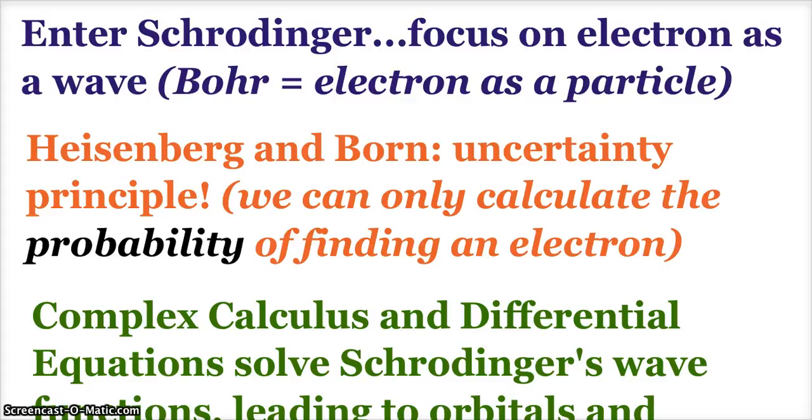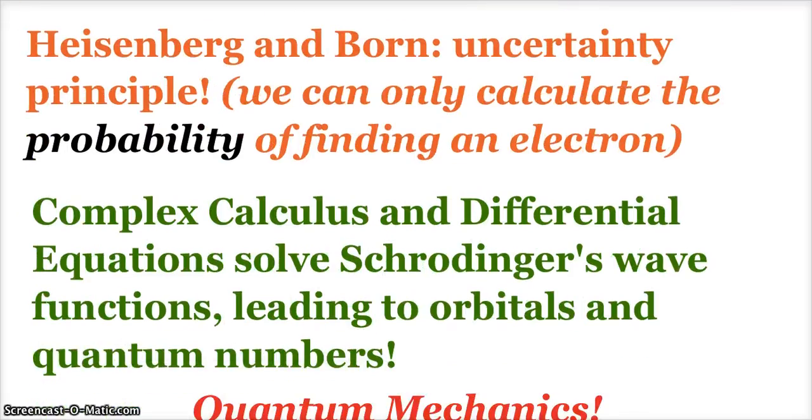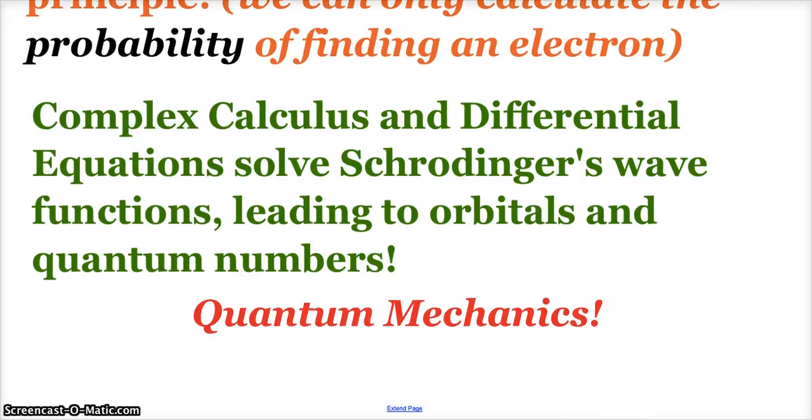So, the rest here, once Bohr's stuff worked great for a single electron system, we have elements that have more than that. So, Schrodinger came in, and while Bohr was focusing on the electron as a particle, Schrodinger said, let's look at it as a wave. Heisenberg and Born came in and gave us this uncertainty principle and said, yeah, when you've got all those electrons, there's no way you're going to be able to find exactly where the electron is and how it's moving and how much energy it has. You're going to be able to figure out a very high likelihood probability of where you would find the electron, but not exactly. You can't know every single thing about a moving electron in that atom. And then, through some complex calculus and differential equations, you can solve Schrodinger's wave functions, and the solutions to these complex math problems end up being our orbitals and quantum numbers that we'll talk about and electron configurations.